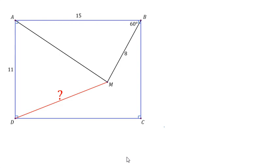Let's have a short geometry exercise. We have rectangle ABCD such that AB equals 15 and AD equals 11. There is a point M in the interior of the rectangle such that BM is 8 and the measure of angle ABM is 60 degrees.